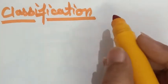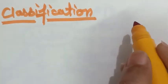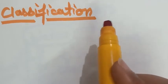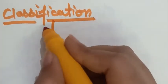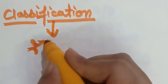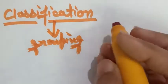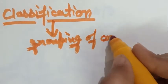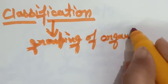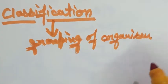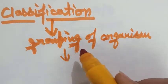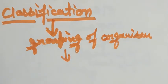So first we should know what is the meaning and concept of classification. Actually, classification is grouping of organisms, whether they are animal or plant. Grouping of organisms on the basis of their similarities and differences is known as classification.